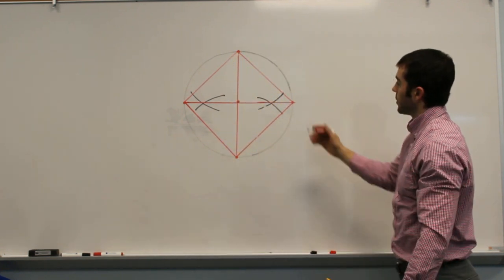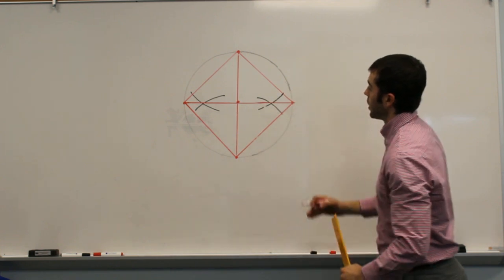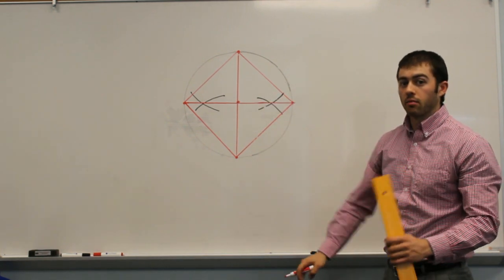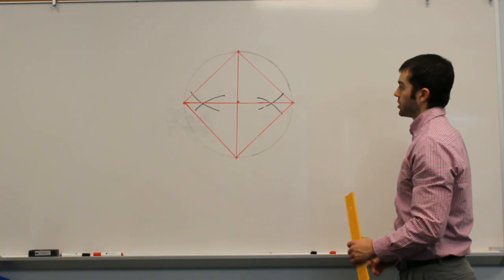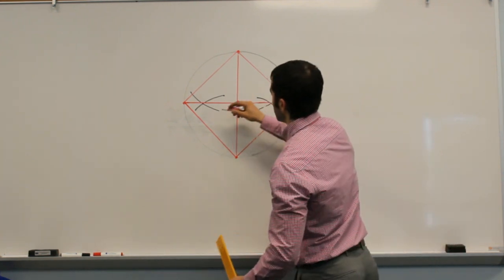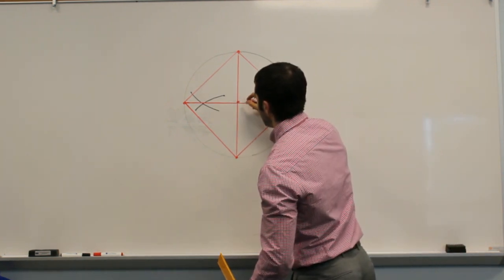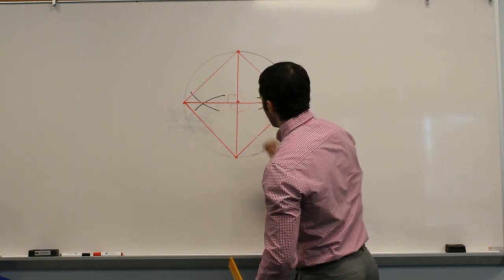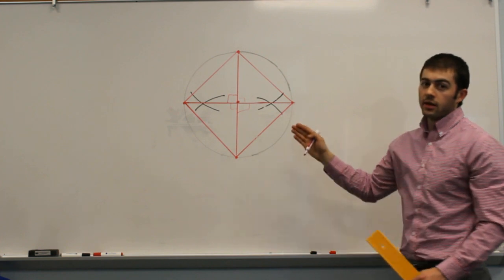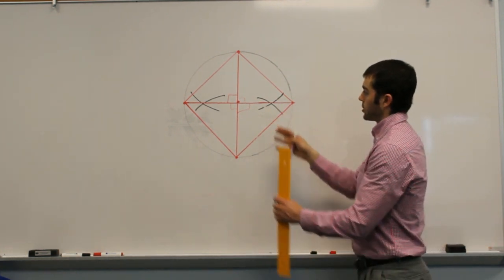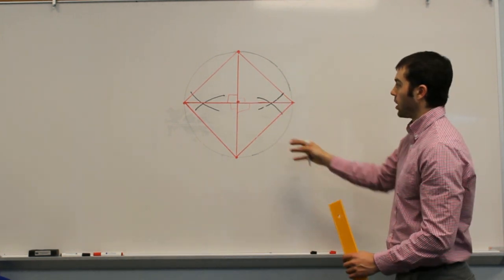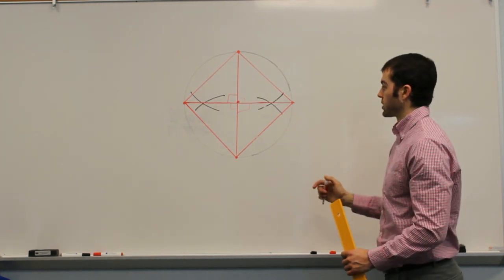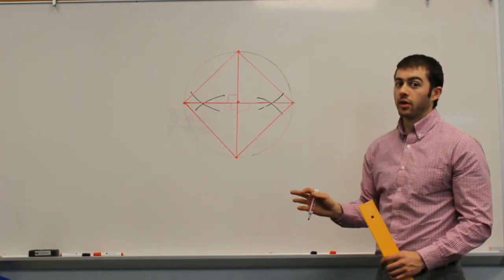So you'll see what we've done is created a square using two diameters that are perpendicular bisectors of each other. Because this is a perpendicular bisector, we know all the angles in here are 90 degrees, which tells us the sides of our square are going to be congruent. We could go through some proofs as to why this works, but that's for another time.